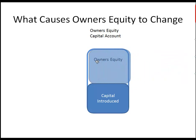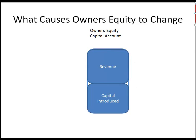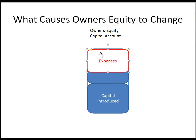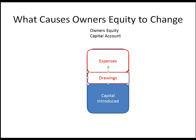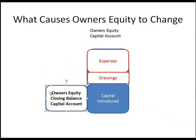During the year we may make sales, so we have revenue. The owner's equity account is increased when we add capital and increased when we add revenue. But we also will have expenses, and that will reduce the owner's equity account. We may also draw money out, and that would leave us with the owner's equity closing balance.